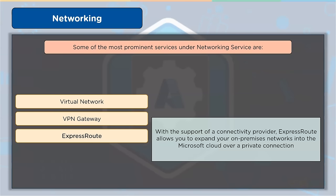With the support of a connectivity provider, Azure ExpressRoute allows you to expand your on-premises networks into the Microsoft cloud over a private connection. You can connect to Microsoft cloud services such as Microsoft Azure and Microsoft 365 using ExpressRoute via an any-to-any IP VPN network, a point-to-point Ethernet network, or a virtual cross connection at a co-location facility. Since ExpressRoute connections are not made through a public network, they provide more reliability, quicker speed, constant latencies, and higher security than traditional internet connections.